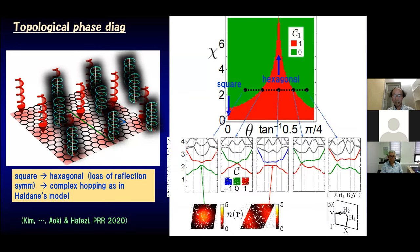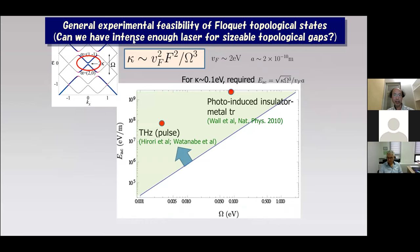On the general question of experimental feasibility of Floquet topological states — can we have intense enough laser for sizable topological gaps? — the answer is yes. With today's laser technology, the intensity is strong enough.